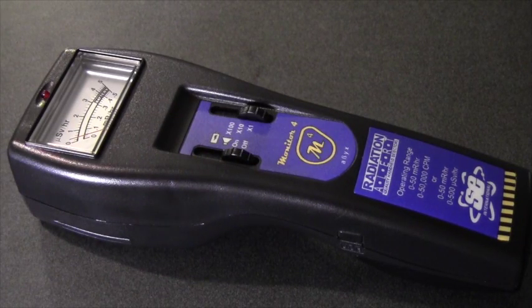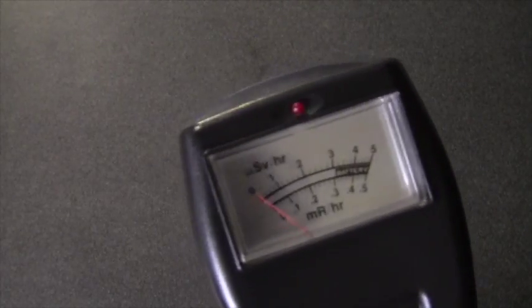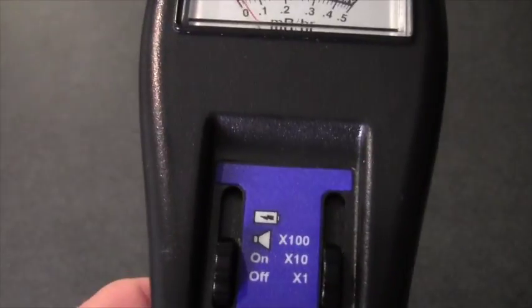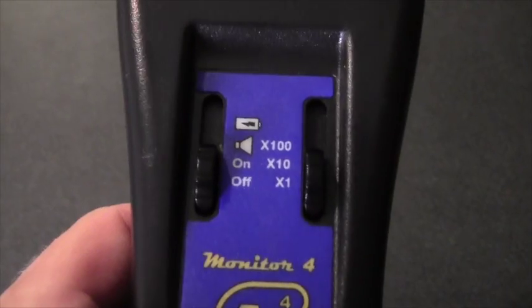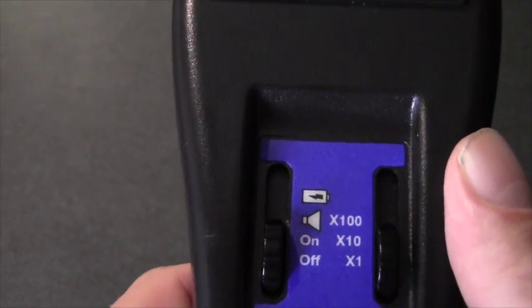This is a demonstration of the Monitor 4 radiation detector. It is a handheld internal end window GM detector. Here is the window. It is ideal for general purpose survey of alpha, beta, gamma, and x-ray. As you can see, the controls are very easy to figure out.